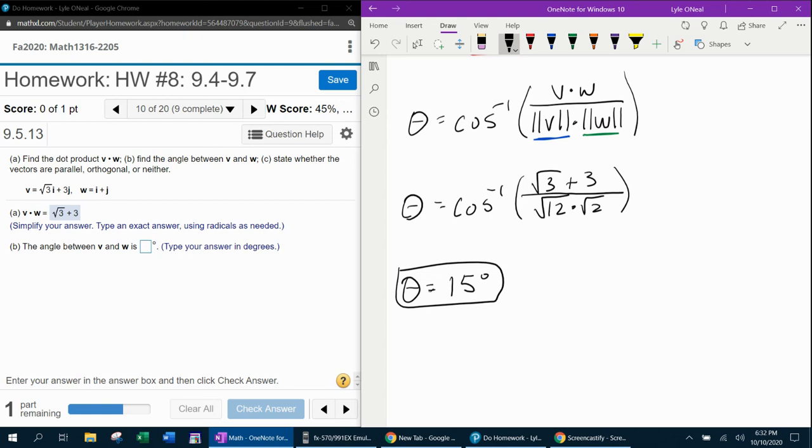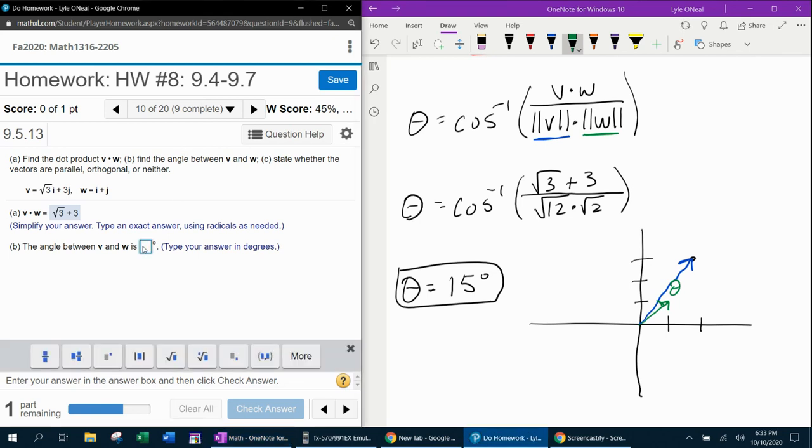Before I plug that into MyLabMath, I want to do a quick visual check. If I graph vector V, √3 is about 1.7, so it goes over 1.7 and up 3. Here's what vector V looks like in blue. Vector W goes over 1, up 1. The angle between those two vectors is very small, so I feel good about my 15 degrees.